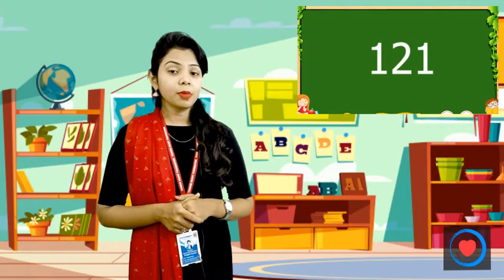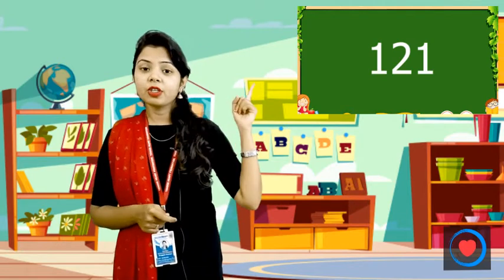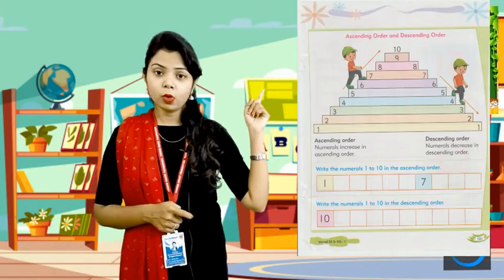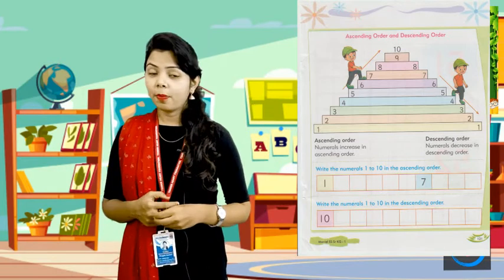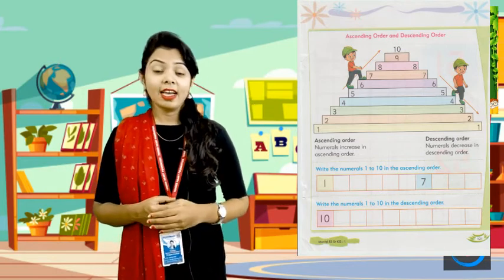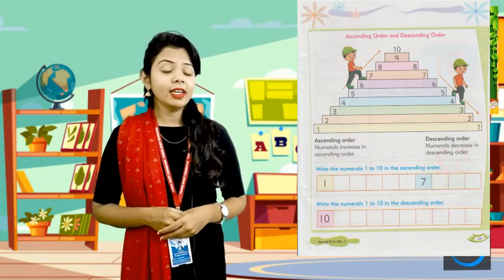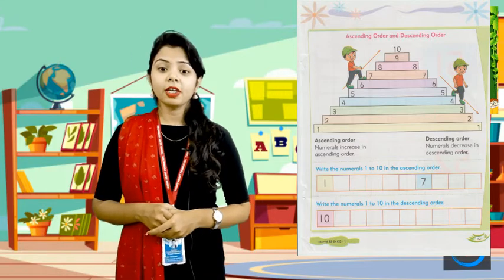So let's take our big book, page number 121. We will open our big book, page number 121. So what do we see? Ascending and Descending Order.